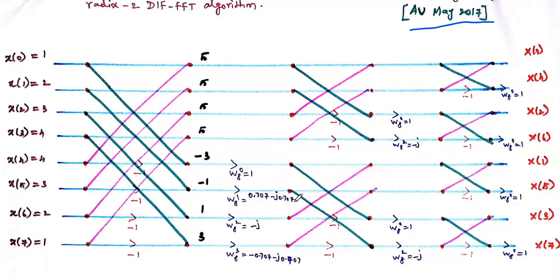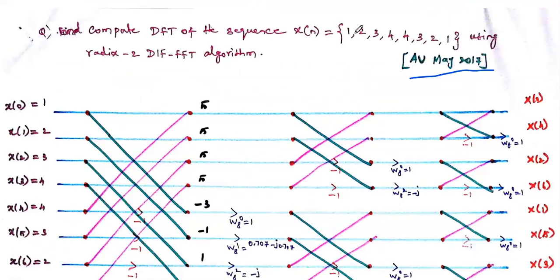The twiddle factor values are: W8^0 = 1, W8^1 = 0.707 − j0.707, W8^2 = −j, and W8^3 = −0.707 − j0.707. In the next stage we have four-point butterflies, using only even-indexed twiddle factors W8^0 and W8^2. Then in the third stage we connect two-point butterflies with minus-one multipliers and twiddle factors.